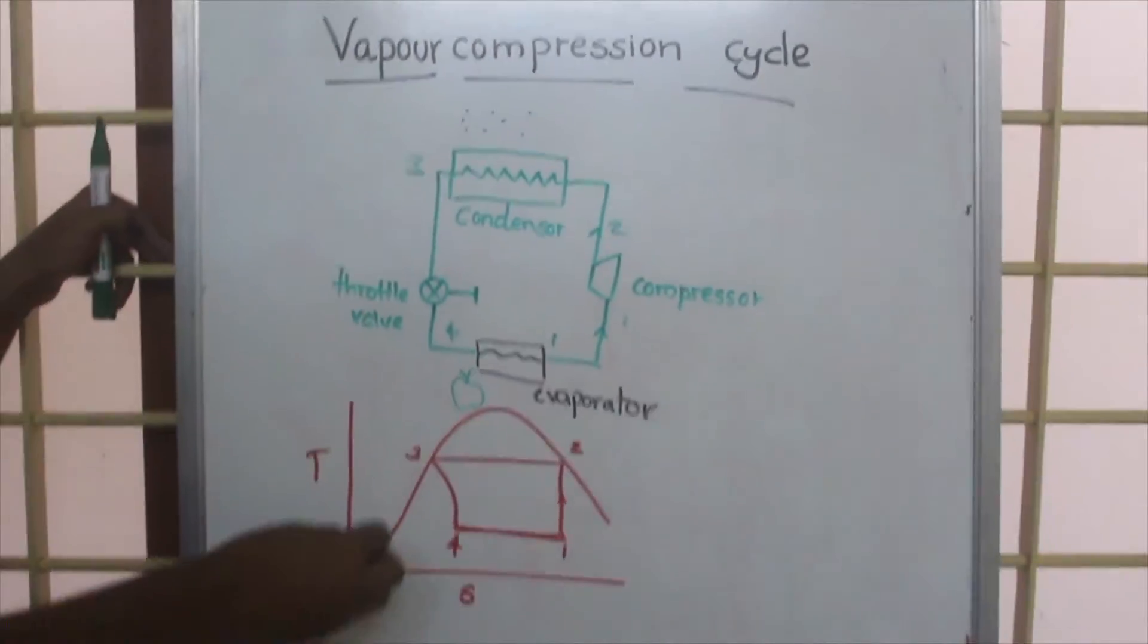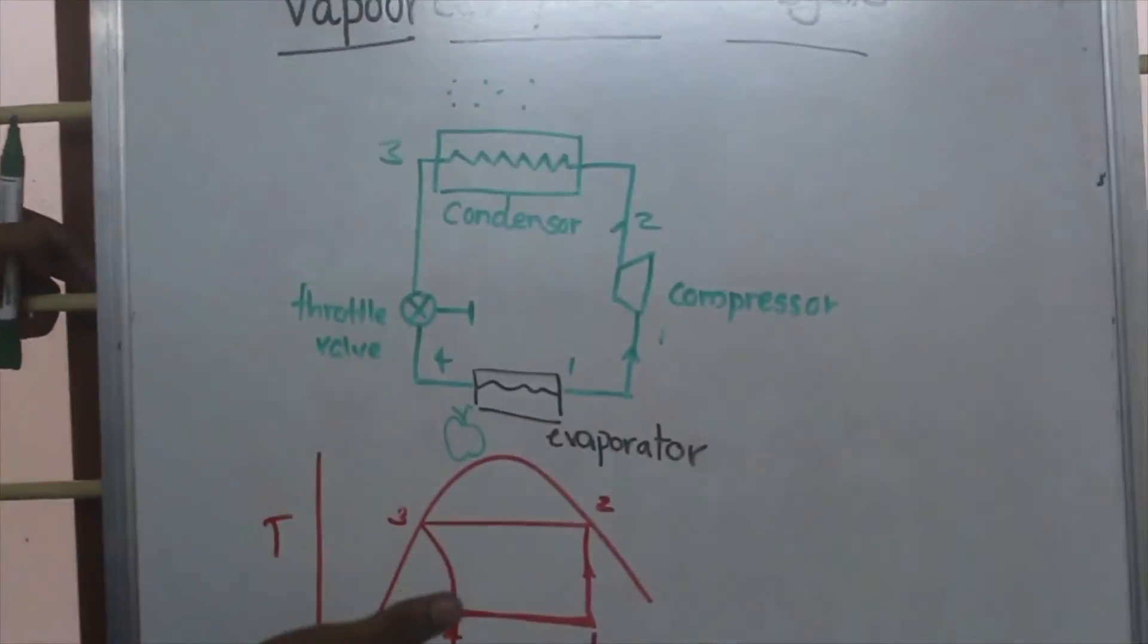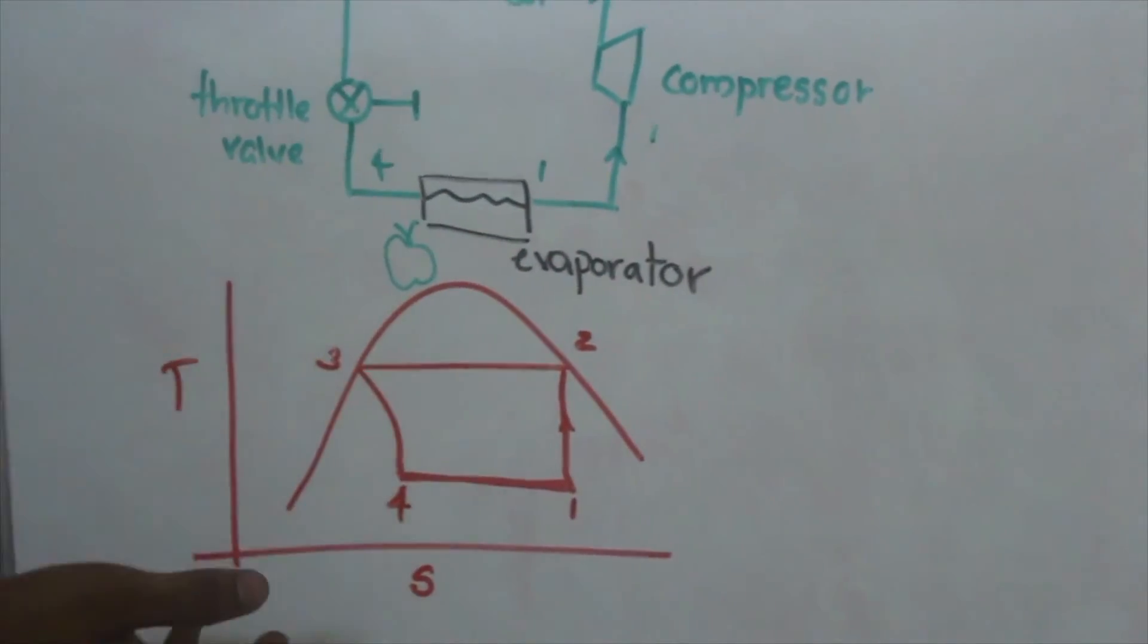At point 4, the quality will be mixed, and this process 3-4 is not isentropic. Even though the compression was isentropic, the process 3-4, the expansion, is not isentropic.